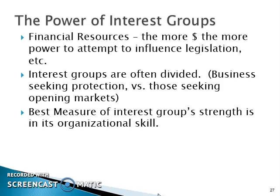One reason money doesn't guarantee influence is that interest groups themselves are divided. You have business interest groups that seek protection for products made within the United States versus those who desire open markets — two types of interest groups diametrically opposed, so both can't get what they want, and there tends to be a balance. It also matters who's in Congress and who's in the White House. But the best measure of an interest group's strength is its organizational skill.